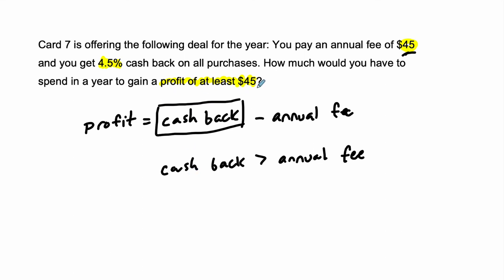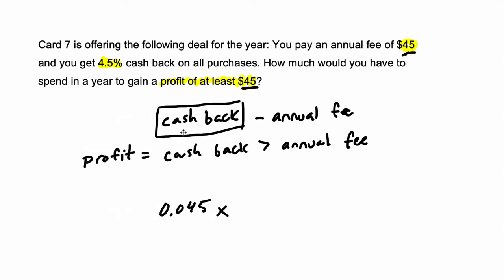And in this case, if we want to gain at least $45, we can set up an equation to do this. We can say, 4.5% is 0.045 times some amount of money. This is our cash back. I'm going to move this over so it lines up. Let me shift some of these things around.